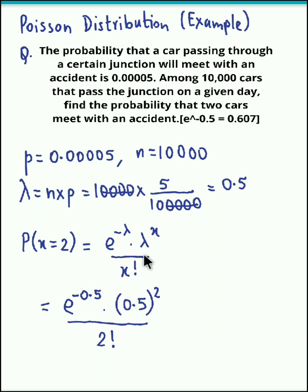So we substitute the value and we obtain P(x=2) equals 0.607 times 0.5 squared, which is 0.25, divided by 2 factorial, which is 2.